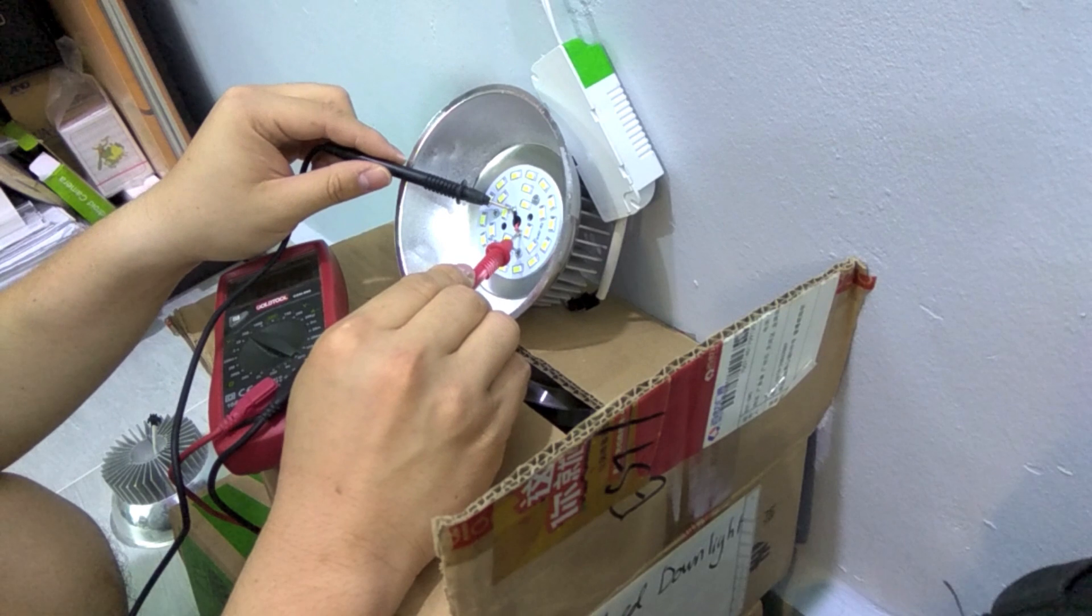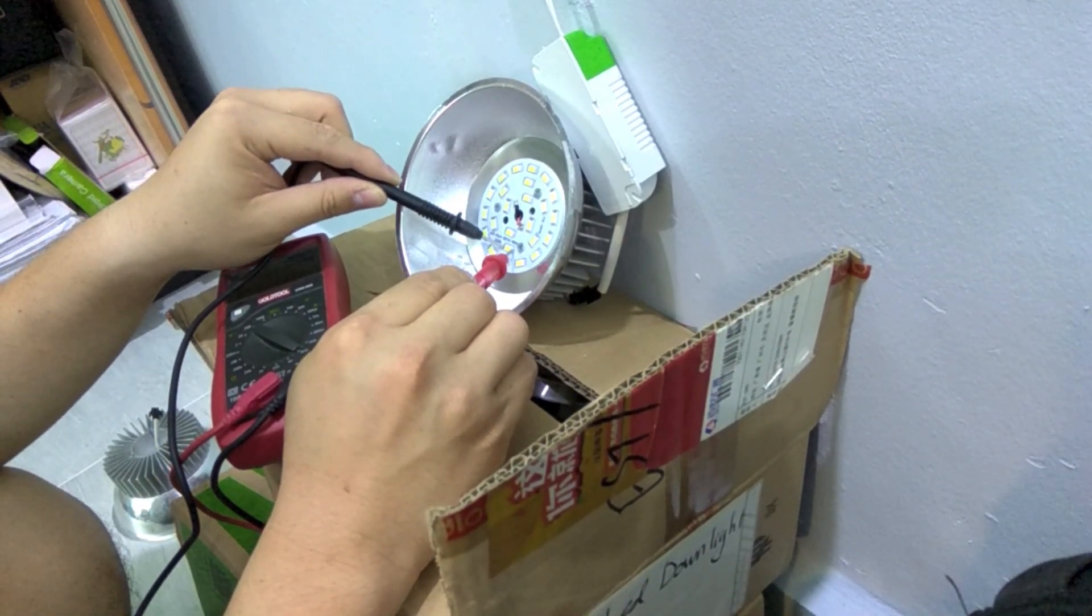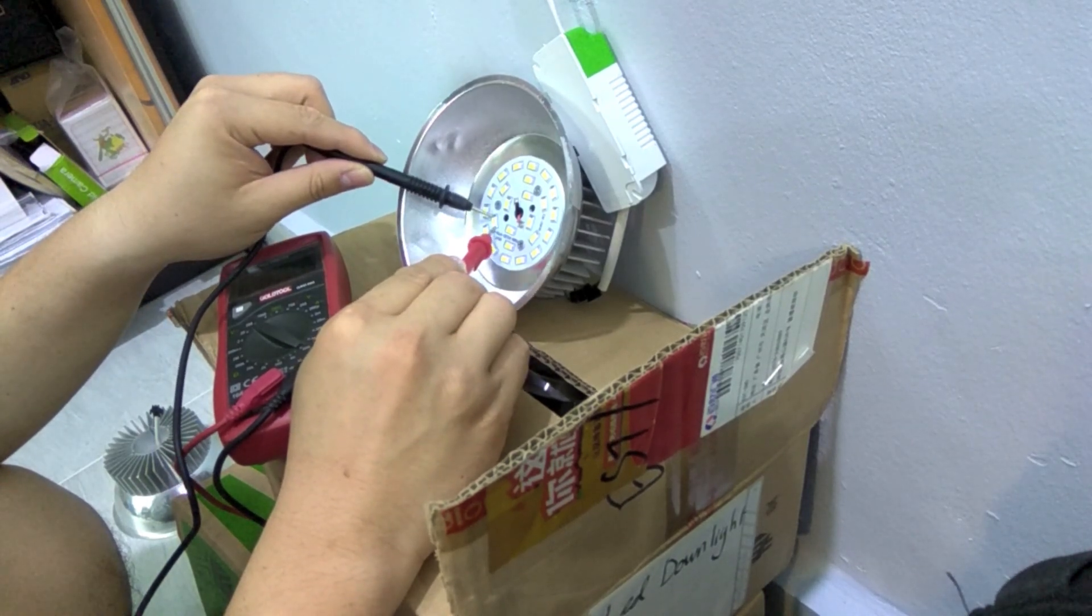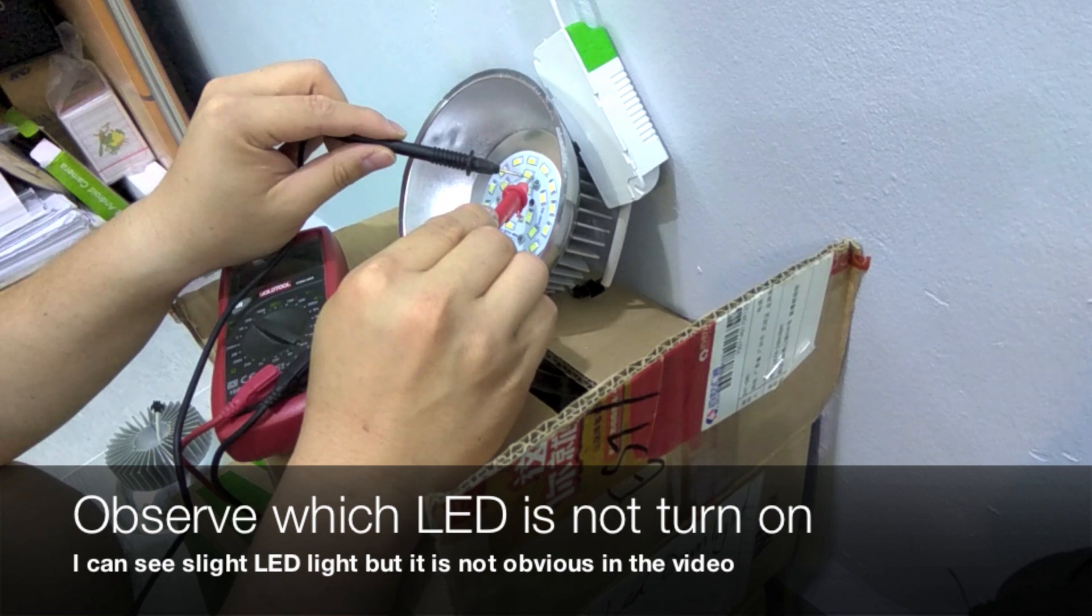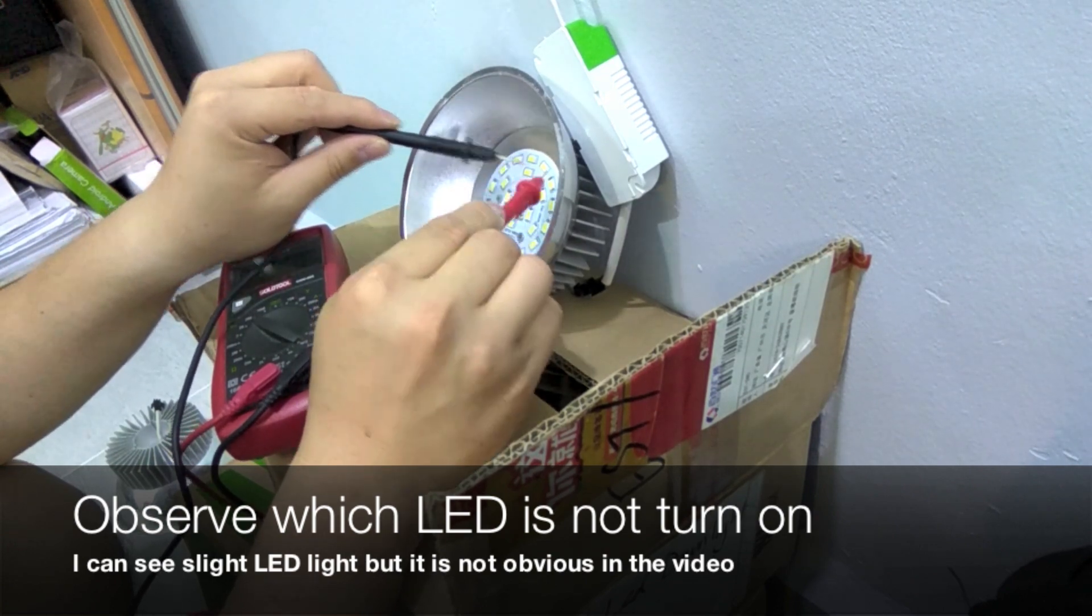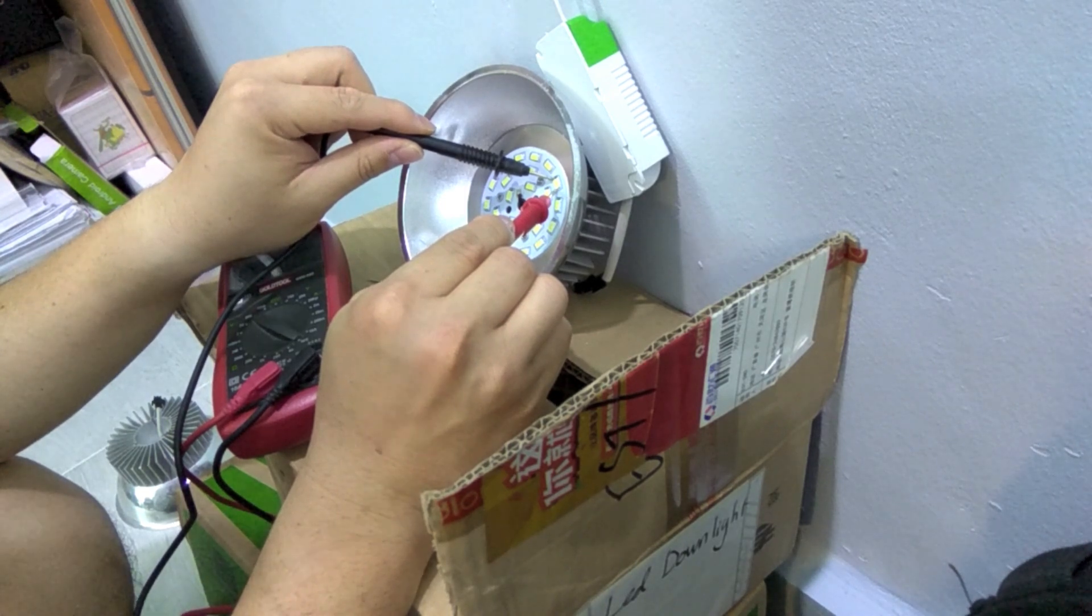By using a multimeter, I test the voltage to see which LEDs actually do not have power passed by them. Here I can see a very dim LED light and the suspected one is the one that has no lights at all.